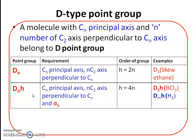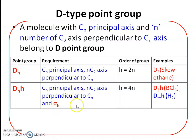Another example of the D-type point group is the DnH point group. DnH means a molecule has a Cn principal axis and n number of C2 secondary axes perpendicular to Cn, and additionally there is a horizontal plane, sigma h. You can focus on this sigma h — the horizontal plane — as the key additional element.